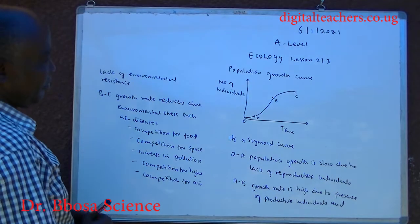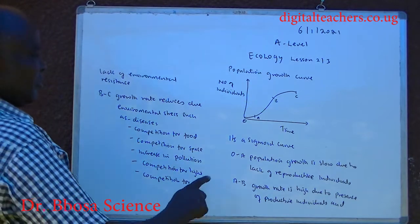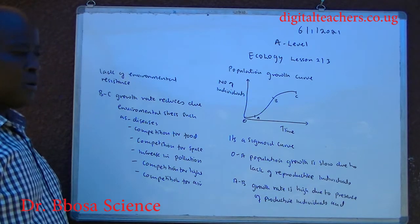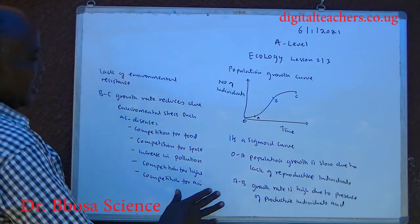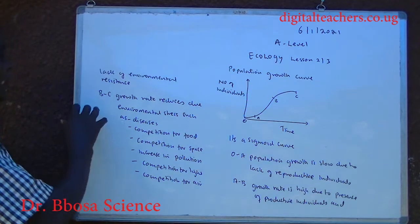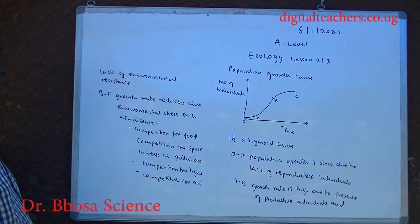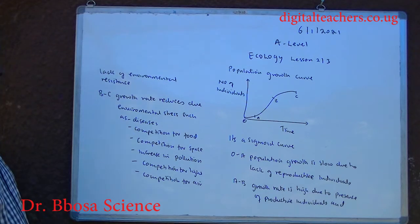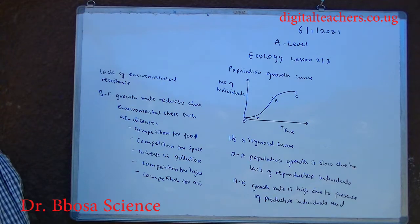Population growth curve: it is a sigmoid curve. O to A — population growth is slow due to lack of reproductive individuals. A to B — growth rate is high due to presence of reproductive individuals and lack of environmental resistance. B to C — growth rate reduces due to environmental stresses such as diseases, competition for food, space, light, air, and mates.